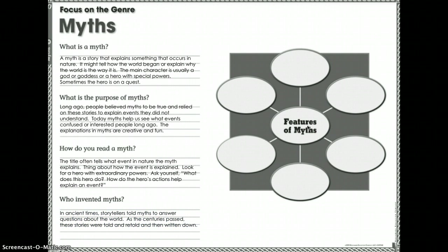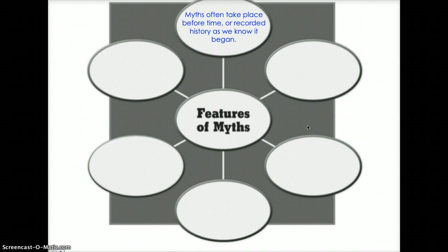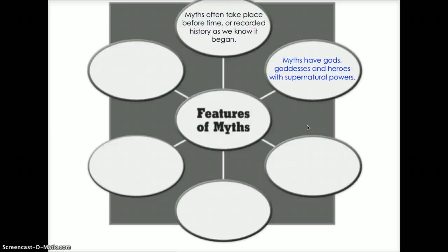Now let's look at the features of myths. Myths often take place before recorded history began — way before anyone was alive, so no one can say 'that didn't happen, I was there.' Myths have gods, goddesses, and heroes with supernatural powers. Their characters are human or human-like and experience human emotions. The interaction between gods, goddesses, and humans made the story more understandable.